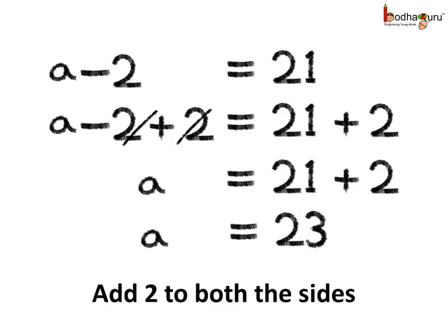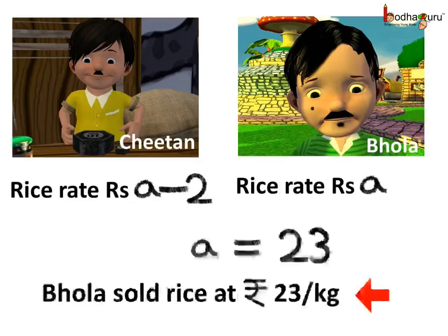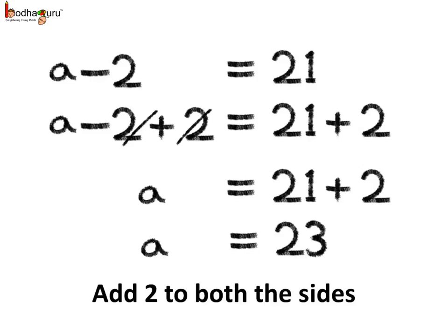So here we solve the problem. And we got the value A is equal to 23, which means Bola sold the rice at Rs. 23 per kg. Now coming back to our solution. Look again how we solve the problem.